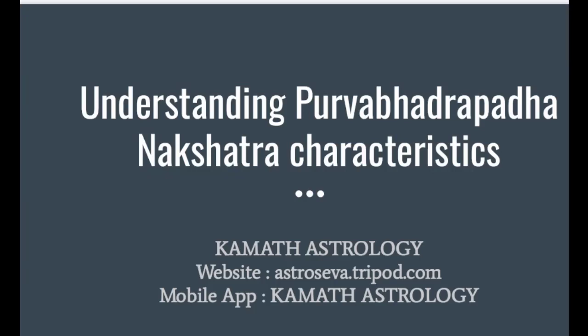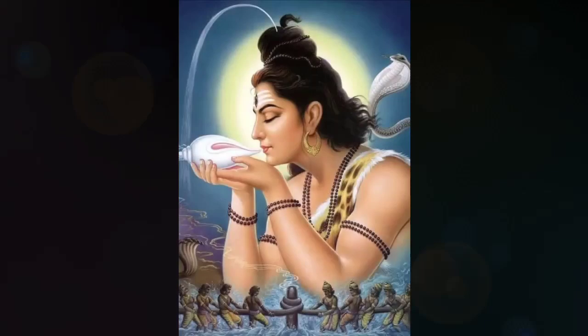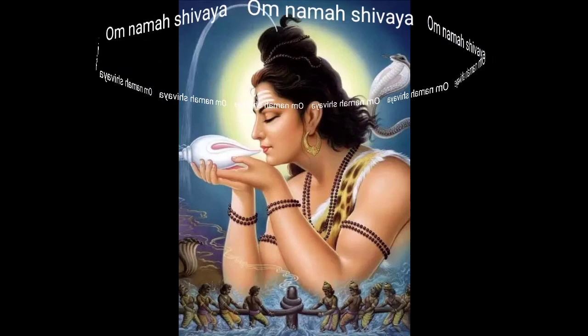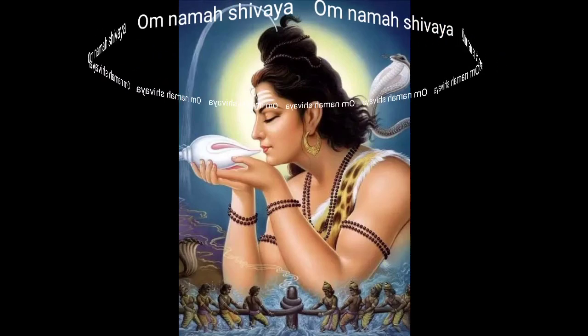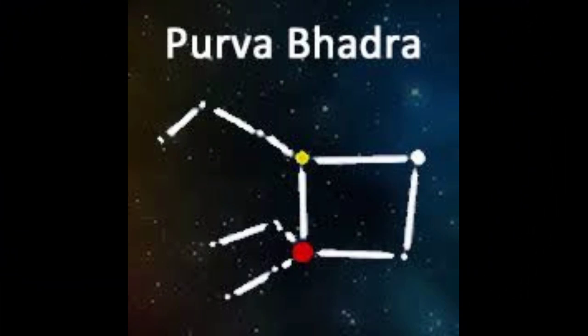Hello friends, welcome to Kamath Astrology. Today I am going to speak on one more topic: understanding the characteristics of a person who is born in the Purvabhadrapada nakshatra. The Purvabhadrapada nakshatra is the 25th nakshatra out of the 27 nakshatras in the natural zodiac.